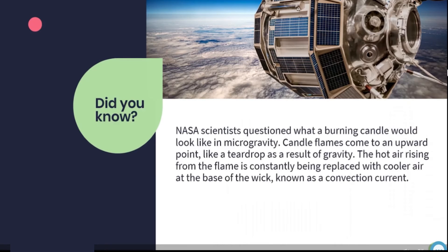Did you know? NASA scientists questioned what a burning candle would look like in microgravity. Candle flames come to an upward point like a teardrop as a result of gravity. The hot air rising from the flame is constantly being replaced with cooler air at the base of the wick, known as a convection current.